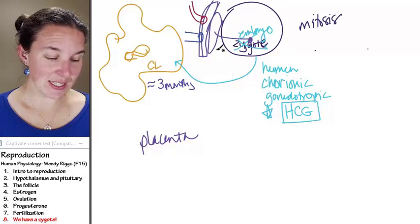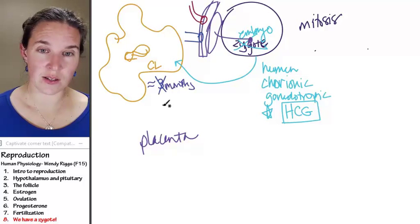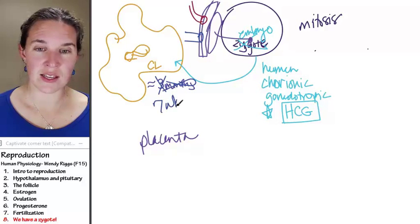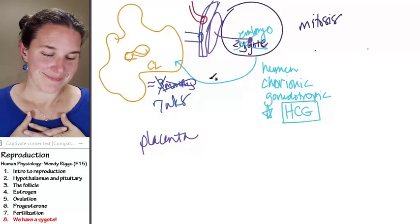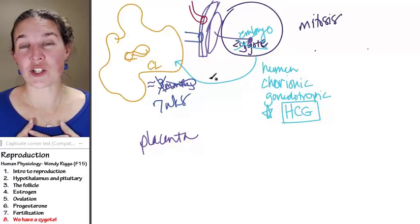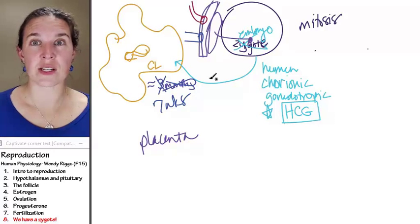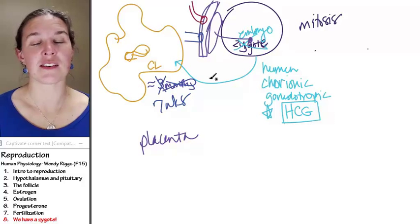Oh look. It says seven weeks. I said that the corpus luteum lived for three months. Cross that off. It's seven weeks. And then the placenta is going to take over progesterone production and make sure that the uterus stays happy and good.